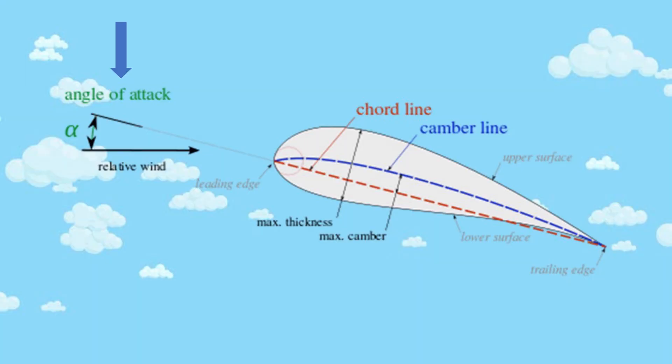In aviation, the angle at which the airplane is flying is known as the angle of attack. As you increase the angle of attack, you increase the amount of lift force you generate. The reason behind this is because you're increasing the curvature on the top surface of the wing, thus increasing the velocity over the wing and decreasing the pressure — and you generate more lift in the upward direction.